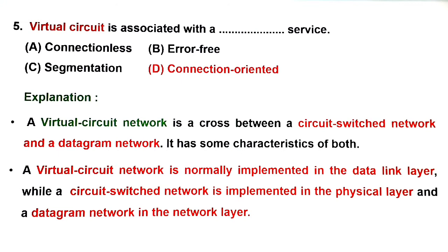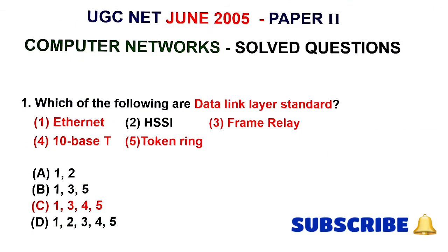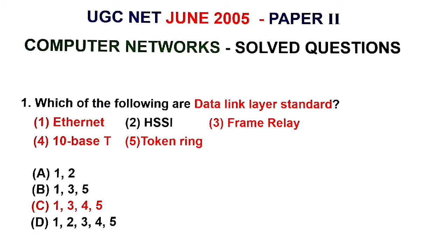Next: UGC Net June 2005 Computer Network solved questions. First question: which of the following are data link layer standards? Answer C: 1, 3, 4, 5 — that is Ethernet, Frame Relay, 10Base-T, and Token Ring. These are all data link layer standards.